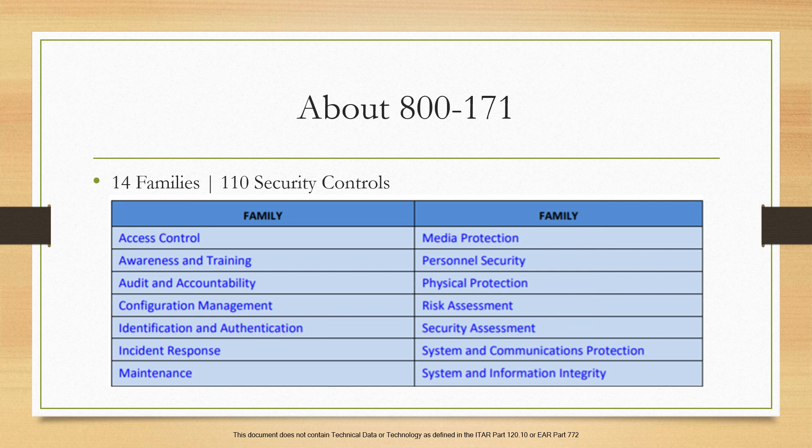Audit and accountability is all about whether records are being kept of authorized and unauthorized access, and whether there is accountability — can you identify who a violator might be or who accessed specific information? Audit and accountability accounts for nine of the 110 controls.